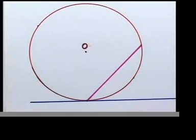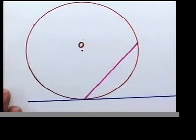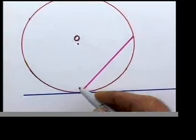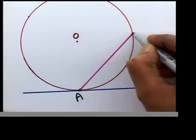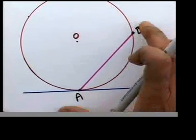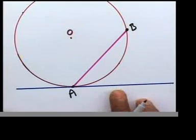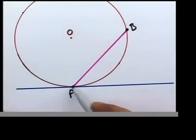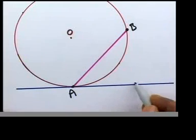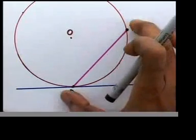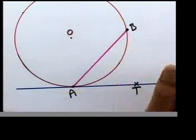Look at the page. You can see a circle, a chord, and a tangent. Let's name them. The chord is AB — point A and point B. The blue line is a tangent AT. So AB is a chord and AT is a tangent.